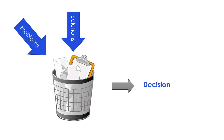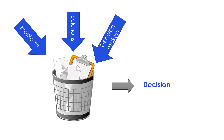The second stream is solutions — answers to problems. Solutions could be ideas, policies, programs, and operating procedures. Importantly, solutions don't need to match an existing problem. Decision-makers can use the solutions already in the garbage can to actively seek out problems that those solutions may be able to solve.